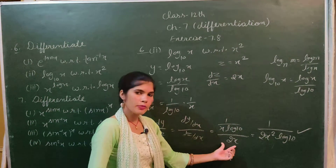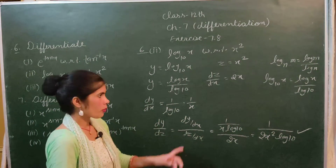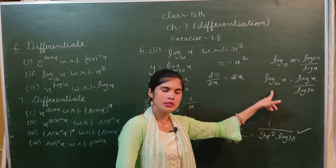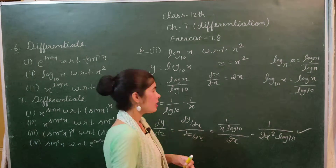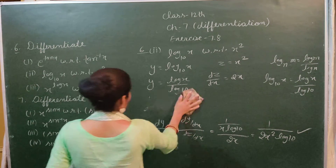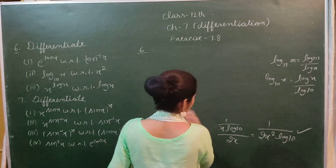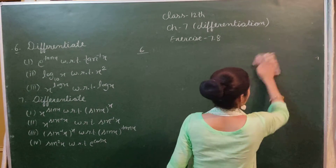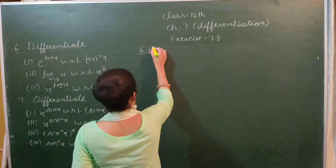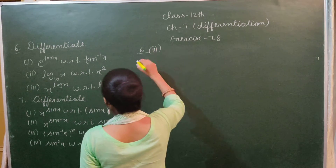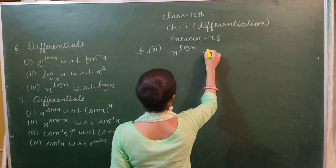The final answer is 1/(2x² log 10). This is our final answer for part two of the sixth sum.